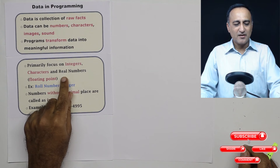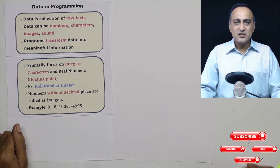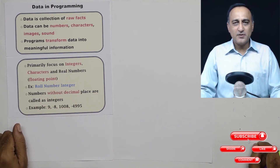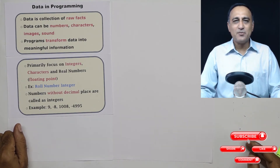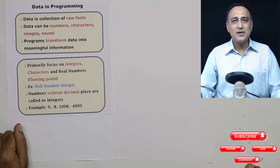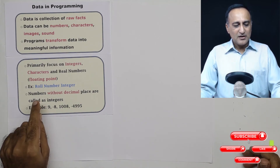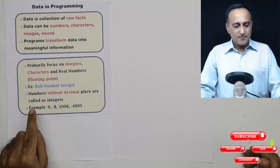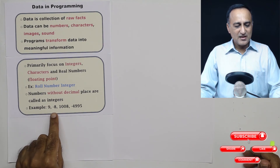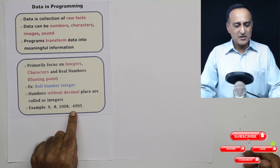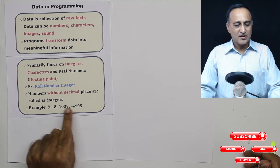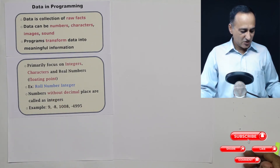Now let's understand real numbers and characters. Suppose you have to calculate the area of a circle — you'd use pi as 3.142. The value of pi is an example of a real or floating point number because it has digits after the decimal place. Examples of integers could be 9, -8008, -4995. Numbers without a decimal place are known as integers.